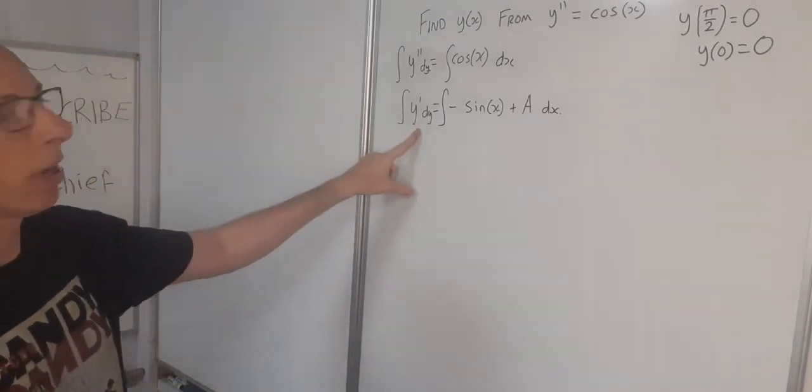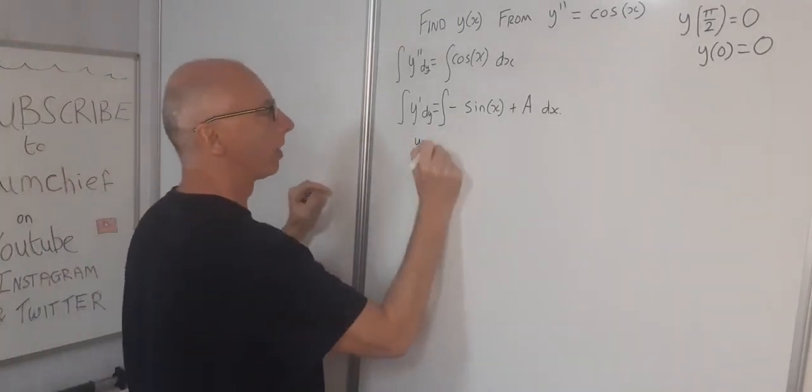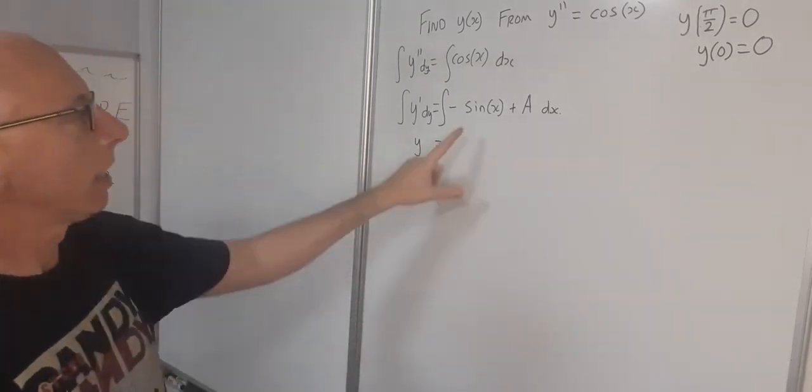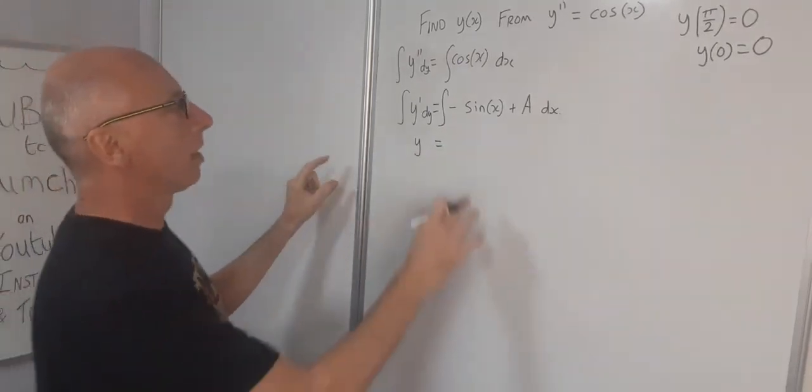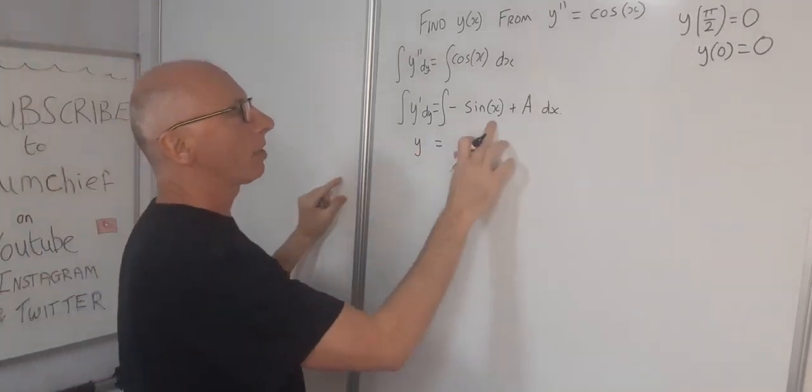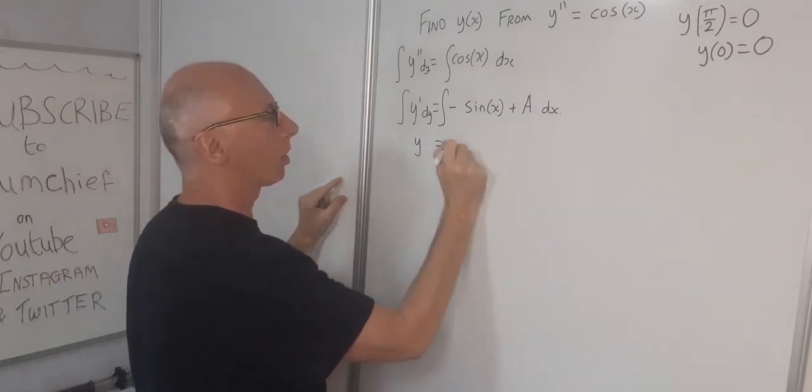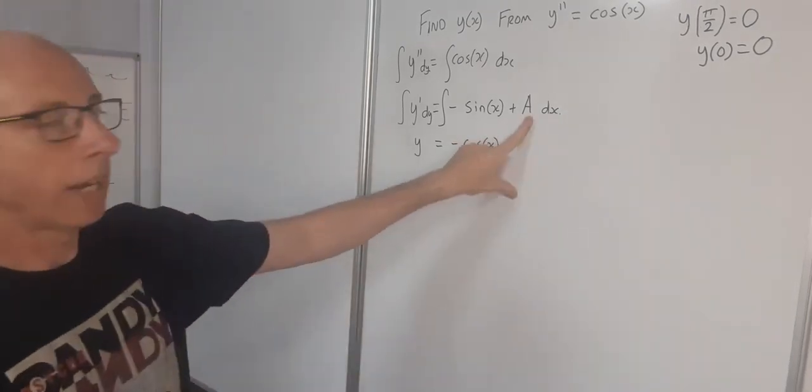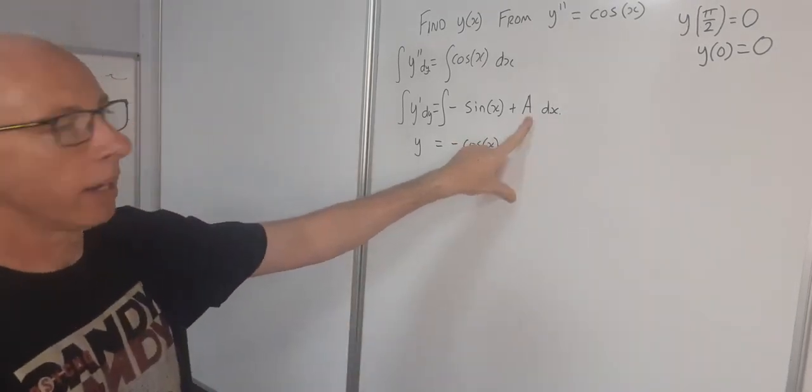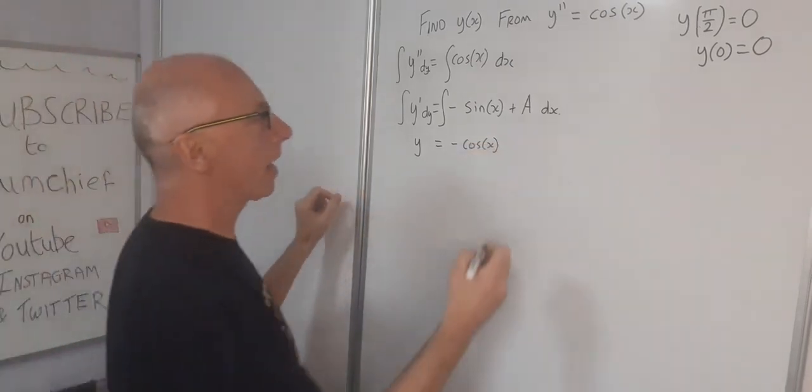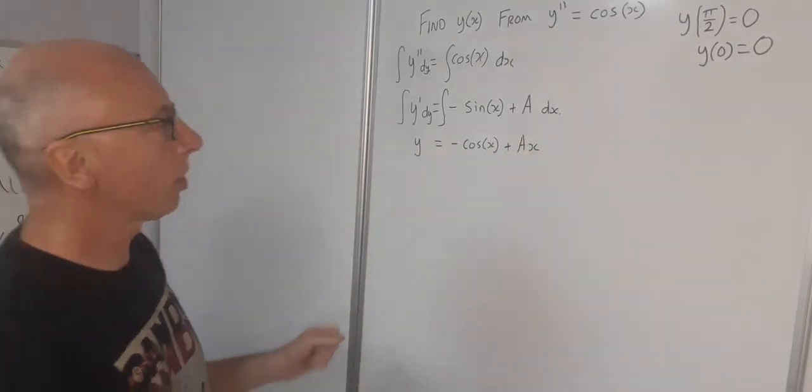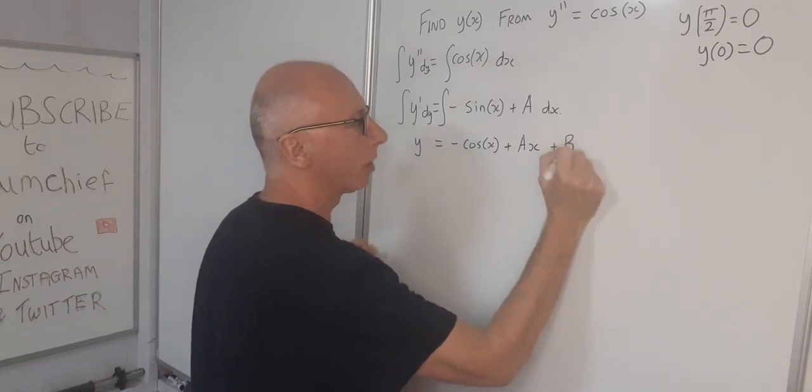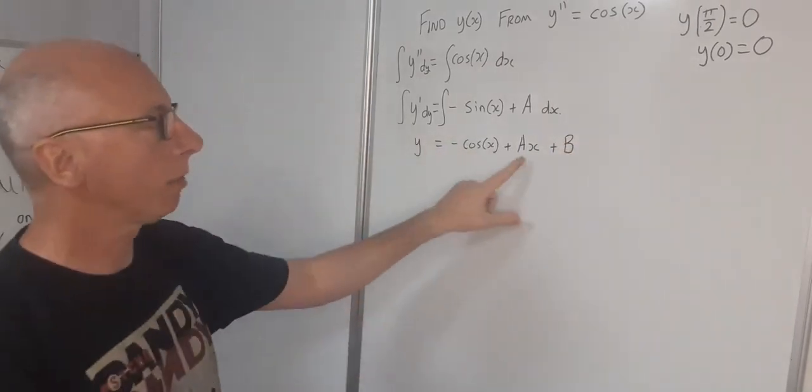So now y prime just becomes y. Now we need to integrate this one here with regards to x. So the integral of minus sine of x, that's just going to become minus cosine of x. Now we're going to integrate this constant here, a, with regards to x, that's going to lead us with ax, so plus ax. And yet again we're going to need another arbitrary constant, just call this one b.